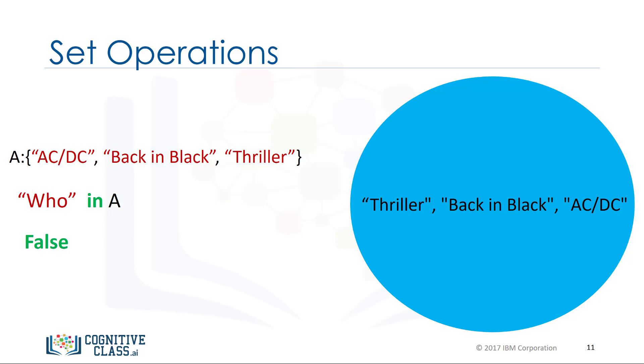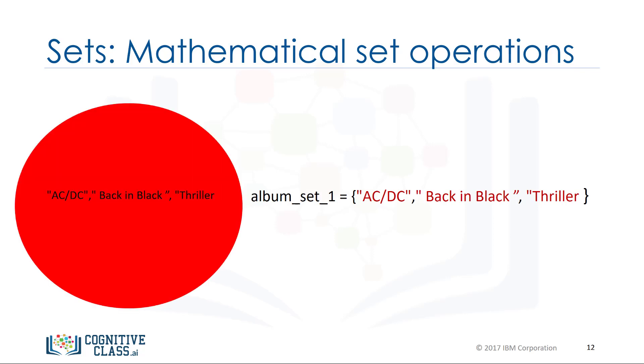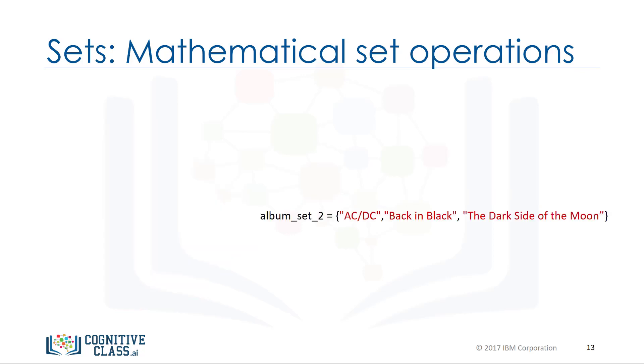These are types of mathematical set operations. There are other operations we can do. There are lots of useful mathematical operations we can do between sets. Let's define the set album set 1. We can represent it using a red circle or Venn diagram. Similarly, we can define the set album set 2. We can also represent it using a blue circle or Venn diagram.